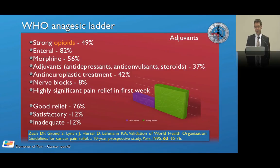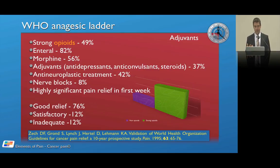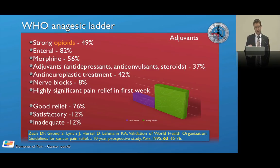Ten years later, in 1995, a large prospective study looked at analgesic use in cancer pain relief. Strong opioids were used 50% of the time. About 82% were given by the enteral or oral route, 56% was morphine, and the other 44% was a host of other medications — morphine again being the mainstay. Just under 40% used adjuvants, including antidepressants, anticonvulsants, and steroids. Steroids are important in cancer pain — they can provide pain relief, reduce nausea, improve appetite, and give a sense of well-being. Antineuropathic treatment was used in 42% of patients.